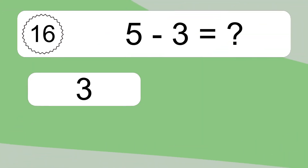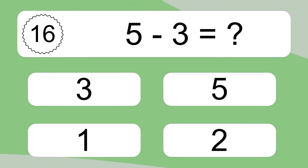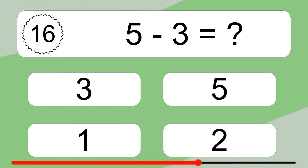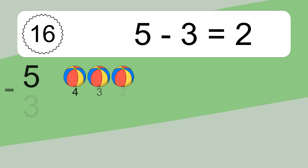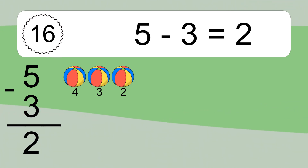5 minus 3 equals what? 5 minus 3 equals 2. Let's count it: 4, 3, 2.